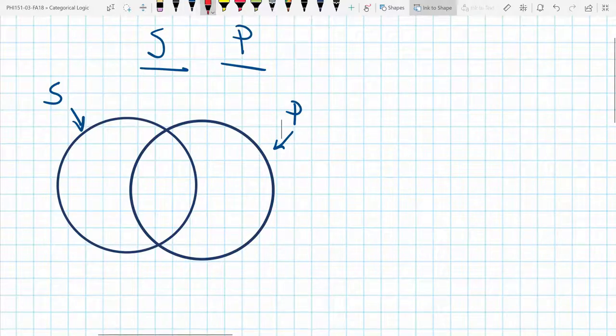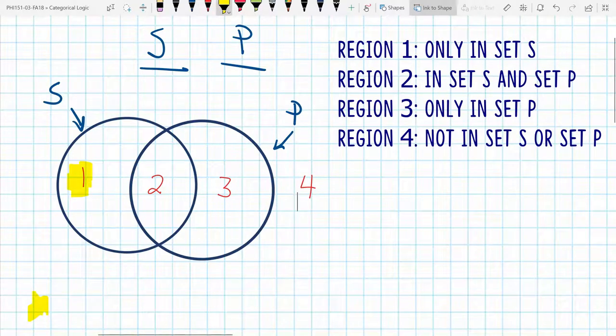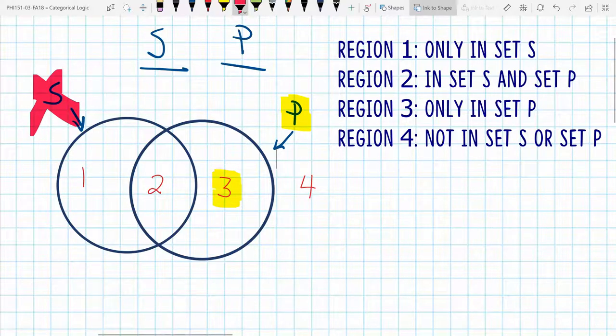And so now we can talk about the different regions that things might exist within. And so there's four basic regions that we can talk about. Region 1, region 2, region 3, and region 4. Region 1 describes things that belong to set S, but do not belong in set P. Region 2 describes things that belong to set S as well as set P. Region 3 refers to things that only belong to set P and do not belong to the set of things that are S.